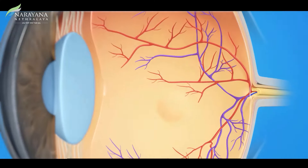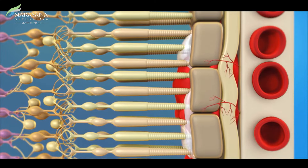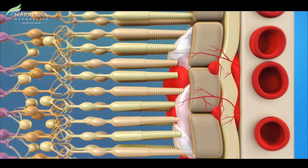Coming to wet AMD — as I said, it is seen in only 10% of patients. These are the patients who come with frank symptoms. They have a membrane formed below the retina which causes leakage of fluid, which can cause bleeding, floaters, and even a sudden drop in vision.